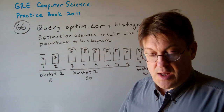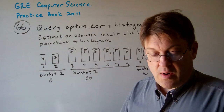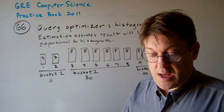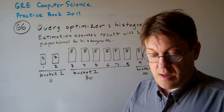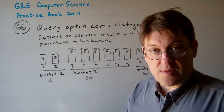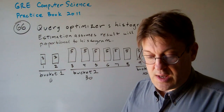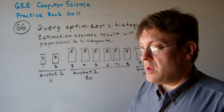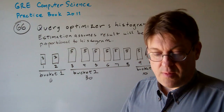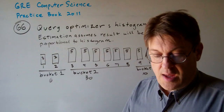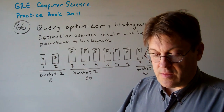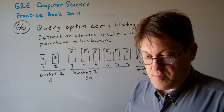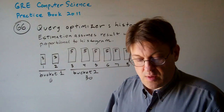So this query optimizer is keeping tabs on the estimate of the size of these intermediate tables, is breaking up the query into different buckets and keeping a count as it goes along to maintain the number of tuples.